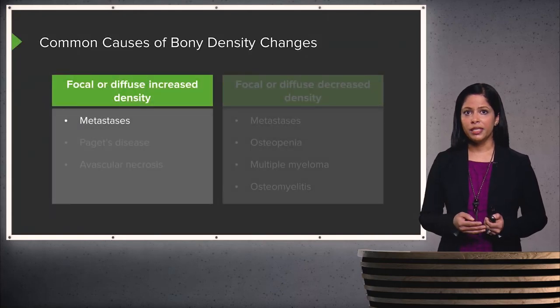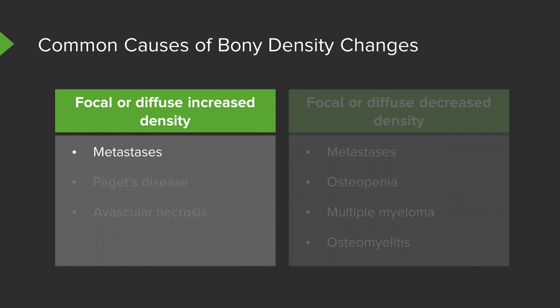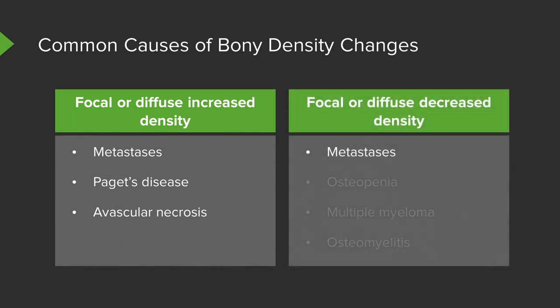Common causes of density changes include metastases, which can be focal or diffuse; Paget's disease, which can also be focal or diffuse; and avascular necrosis. Regarding metastases, a blastic metastasis results in increased density, while a lytic metastasis results in decreased density. Osteopenia, multiple myeloma, and osteomyelitis are additional causes of decreased bone density.